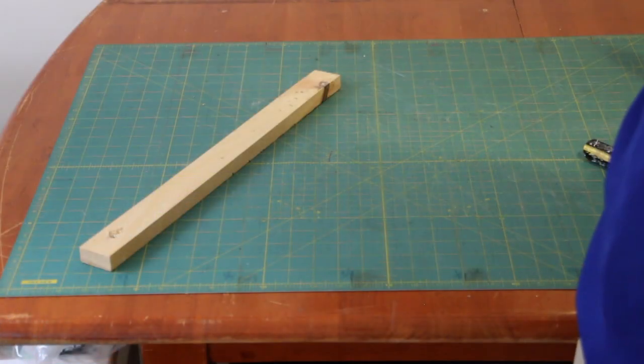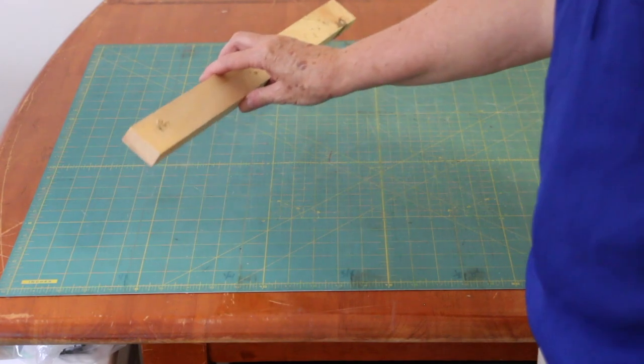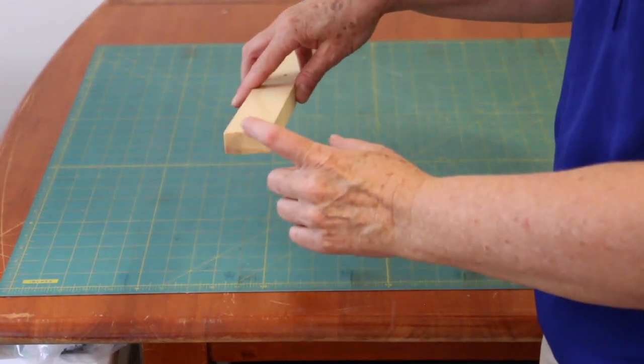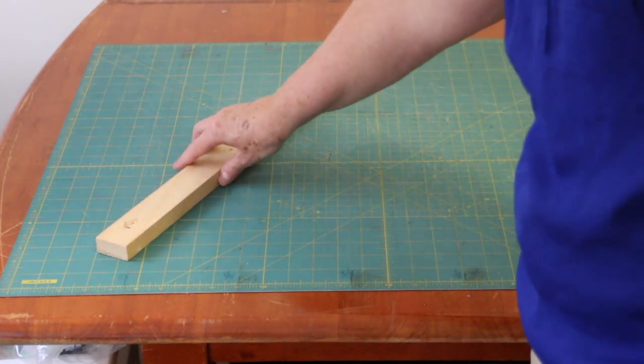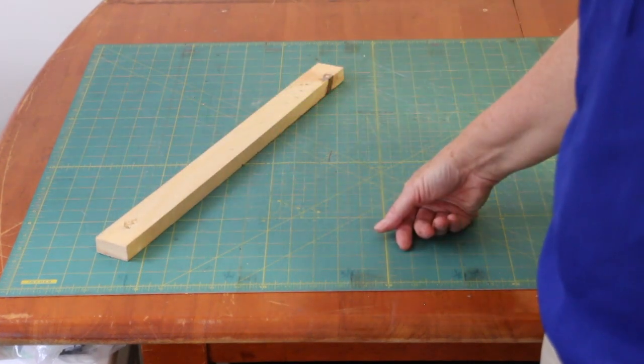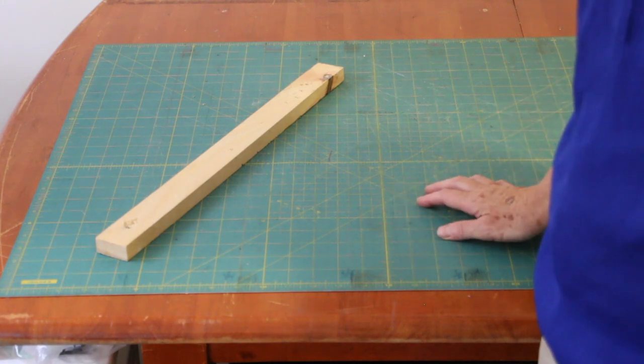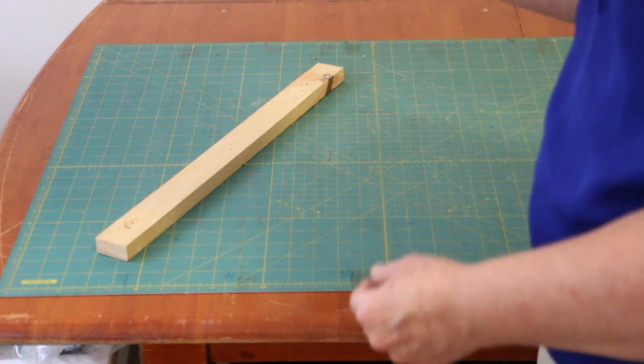For this project you'll need your strip of wood. This one is about 20 inches long, it's an inch and a half wide and three quarters of an inch thick. That's just what I happen to have on hand. As long as the piece of wood is long enough for your purposes, anything will do. If you have some scrap wood around or something left over from another project, you can use that.